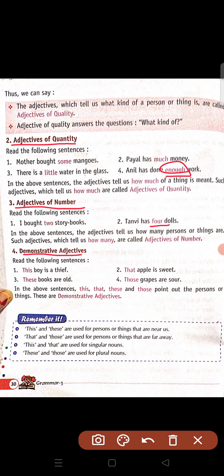Fourth: demonstrative adjectives. Read the following sentences. This boy is a thief. That apple is sweet. These books are old. Those grapes are sour. So in the above sentences, this, that, these, those point out the person or things. These are demonstrative adjectives.